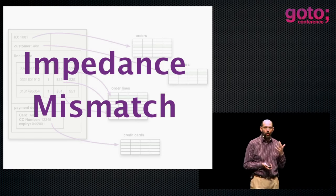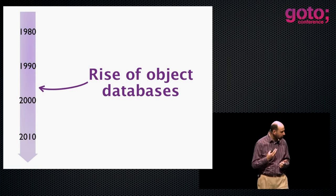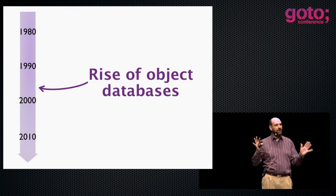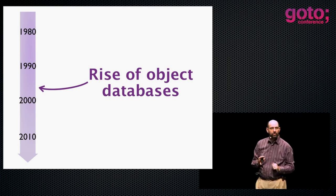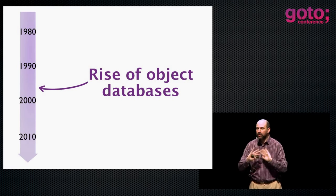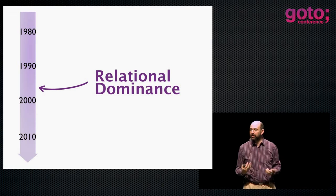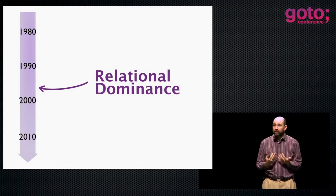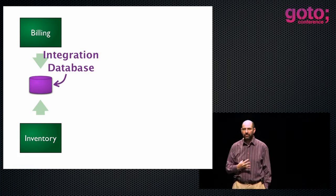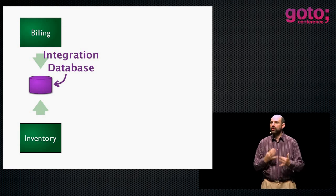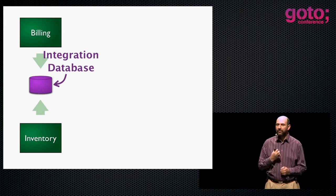The impedance mismatch problem is sufficiently awkward that in the mid-'90s, people said relational databases are going to go away — object databases are going to come in. That way, we can take our in-memory structures and save them directly to disk without any mapping between the two. But we know what happened: we didn't see the object databases take over. I think at the heart of it is the fact that SQL databases had become an integration mechanism — many people integrated different applications through SQL databases — and that really made it very hard for any other kind of technology to come in.